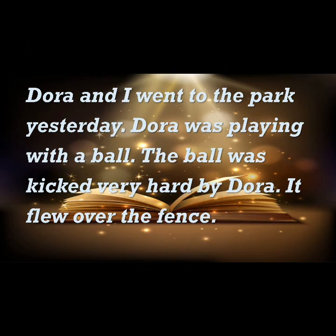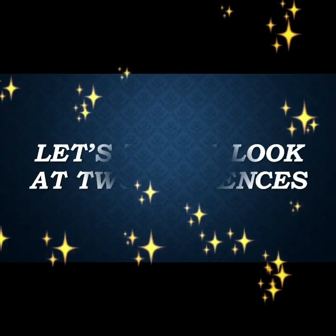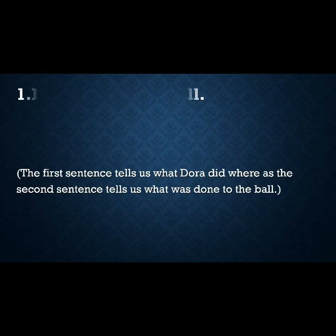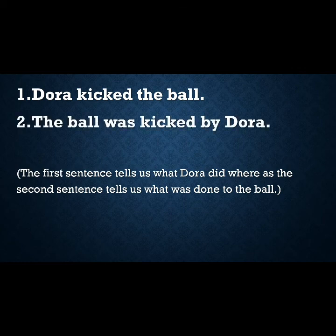Now let's see what Saina has written in her book. She wrote: 'Dora and I went to the park yesterday. Dora was playing with a ball. The ball was kicked very hard by Dora. It flew over the fence.' Now let's take a look at two sentences: 'Dora kicked the ball' and 'The ball was kicked by Dora.' The first sentence tells us what Dora did, whereas the second sentence tells us what was done to the ball.